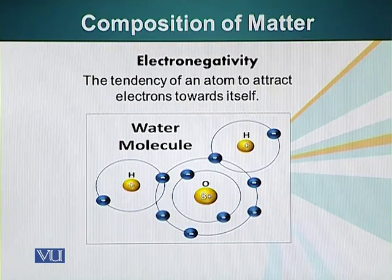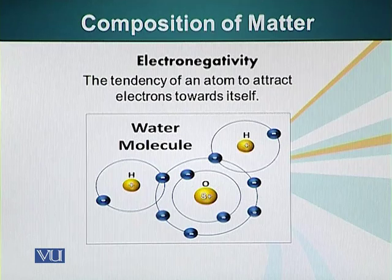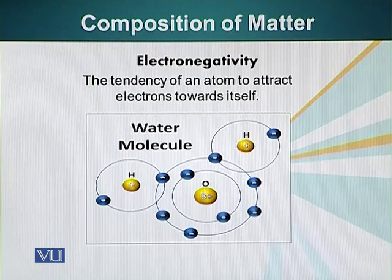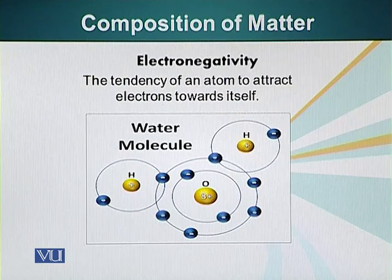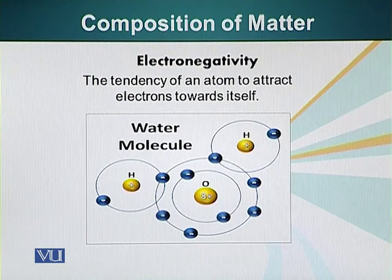I would now like to explain another concept very important in biologically active molecules — electronegativity. The nucleus of the oxygen atom has eight protons and therefore a large positive charge, whereas the nucleus of the hydrogen atom has only a single proton. Eight protons will have a much greater pull on the electrons that oxygen is sharing with hydrogen. Consequently, oxygen keeps those shared electrons closer to itself. Since electrons are negatively charged, the net result is that oxygen has a slight negative charge, and the hydrogen atoms have a slight positive charge.